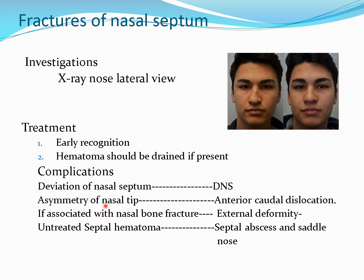Sometimes whenever there is dislocation of the nasal septum from the maxillary crest, there will be asymmetry of the nasal tip, which is called anterior caudal dislocation. If it is associated with external nasal bone fracture, there will be external deformity. Untreated hematoma can lead to septal abscess formation and later on necrosis of cartilage.